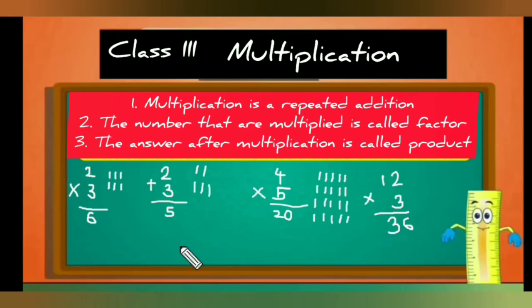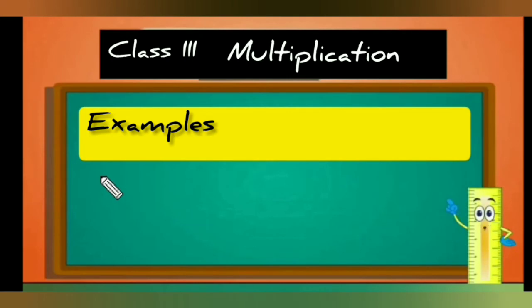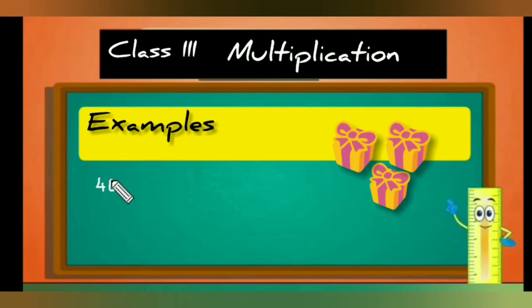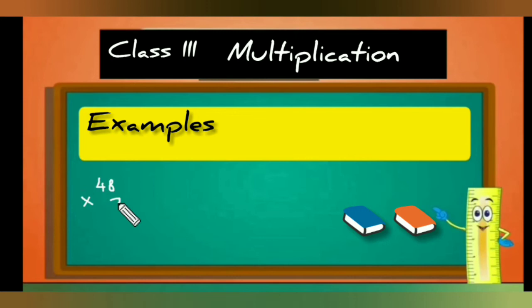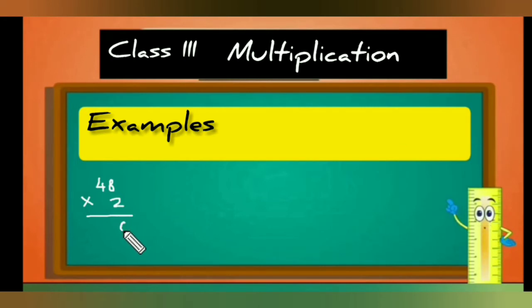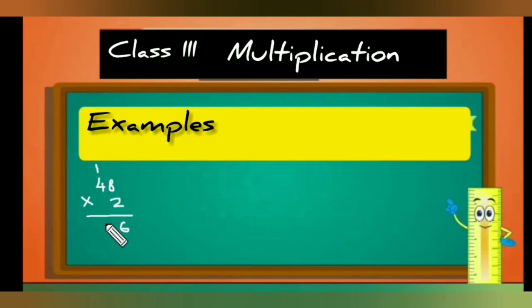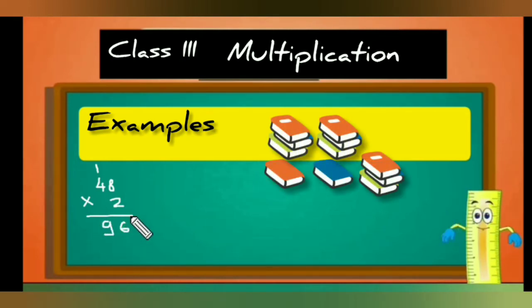To do multiplication, you need to remember the tables, so make sure you learn the tables before the next video. Now a word problem: I have 48 gifts and each gift has 2 books — how many total books? Two multiplied by 8 equals 16, write 6 and carry 1. Two multiplied by 4 plus carry 1 equals 9. So the answer is 96.